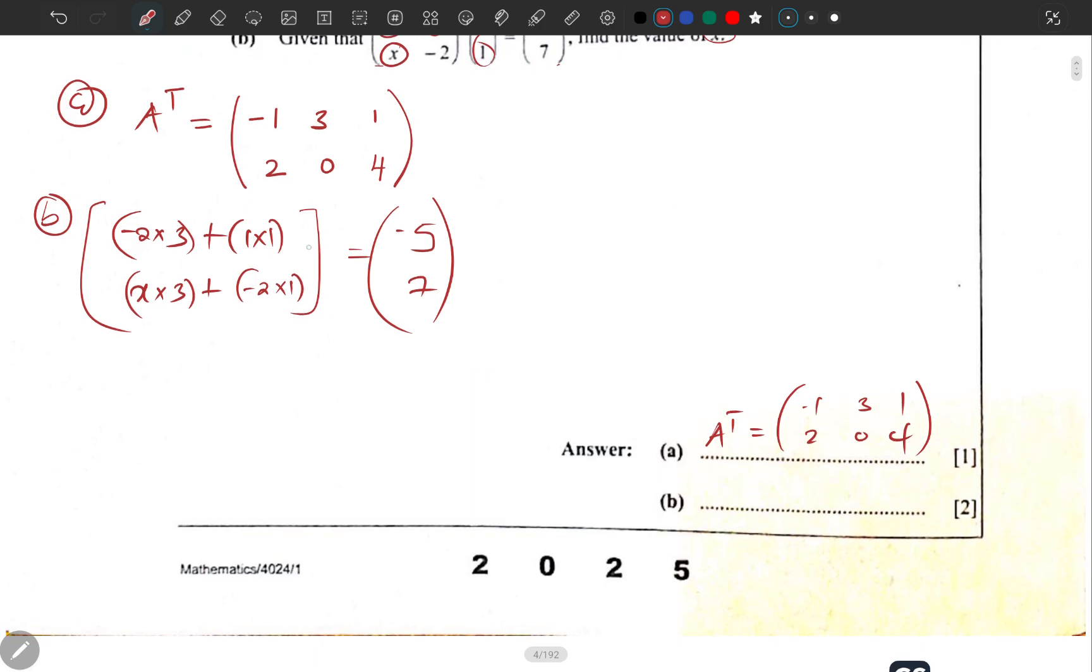This part here we don't want because there's no x there. This will give you -6 + 1, and here 3x - 2. So we have -6 + 1 = -5, and 3x - 2 = 7. Can you see something here? These two are equal, meaning we are doing something correct. Meaning even these two must be equal, so 3x - 2 must equal 7.